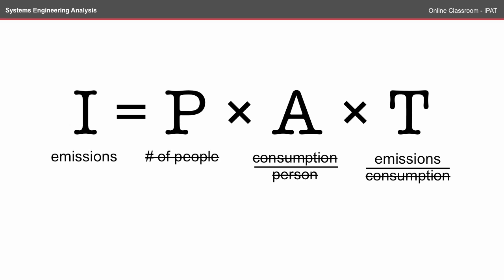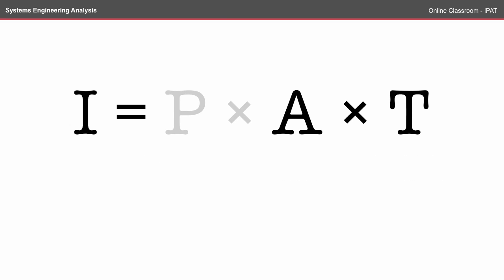If we go back to emissions, you'll notice that the units cancel themselves out. If we're looking at two different types of vehicles to choose from, P becomes a bit redundant because the population in this instance is the same. So then we look at the affluence and the technology.